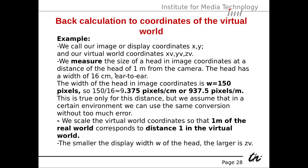Here is an example. We call our display coordinates X and Y, and the virtual world coordinates XV, YV, and ZV. We measure the height and size of a head in image coordinates at a distance of one meter from the camera — this is the calibration. The head has a width of 16 centimeters ear to ear. The width of the head in image coordinates at one meter distance is W equals 150 pixels. That means 150 divided by 60 is 9.375 pixels per centimeter, or 937.5 pixels per meter, giving the correspondence between pixels and meters. We assume this holds reasonably well across different positions in the image.